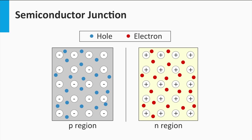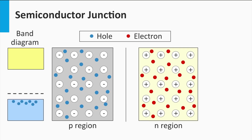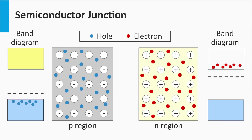On the left we see a p-type semiconductor material, and the electronic band diagram of the p-layer is illustrated on the left as well. For the p-type silicon, the Fermi level, indicated by the dashed black line, is closer to the valence band than to the conduction band. On the right we see the n-type semiconductor material, and its corresponding electronic band diagram is illustrated on the right. The Fermi level is closer to the conduction band for the n-type material.